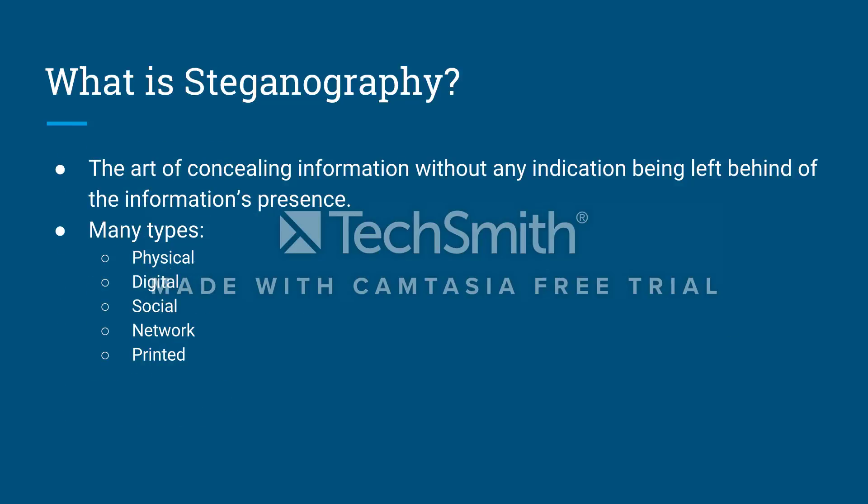To start off the lesson, we must ask ourselves a simple question: what is steganography? In simple terms, steganography is the process or art of concealing information without leaving behind any trace of the information's presence. There are five primary types of steganography. The first is physical steganography, which involves the physical covering or changing of something in order to hide a message.